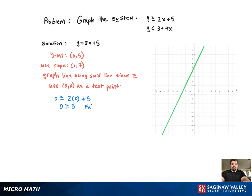And when we use that test point, we realize that the statement we get is false, so we shade above the line, not below the line because that contains (0, 0).